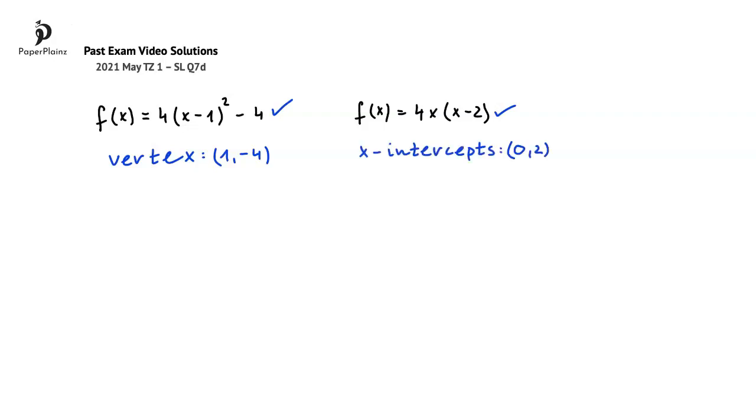Based on this information, we can sketch the graph of f, which is a parabola. Since the leading coefficient in the expression for f(x) is positive, we have a parabola that opens upwards and looks like this.